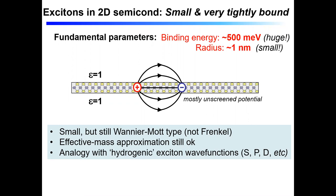But excitons are small and still occupy a couple of dozen unit cells, so we can still consider them Wannier-type excitons and the effective mass approximation is still valid. In analogy with hydrogen-like states, this exciton can have not only a 1s ground state but also 2p, 2s, 3s excited states, and so on.